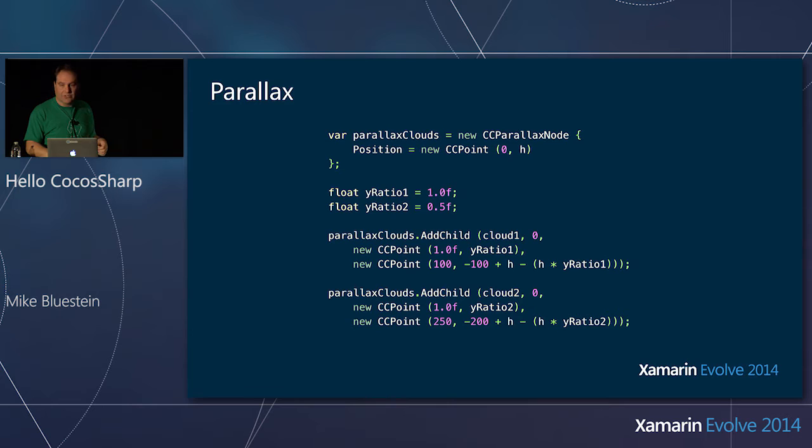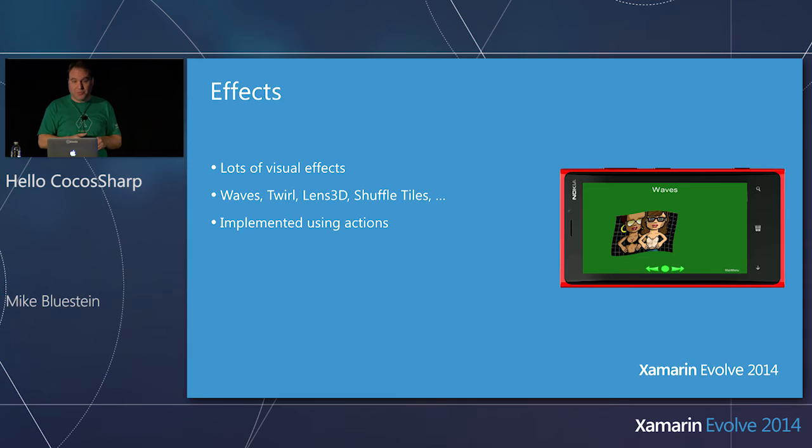Here's the code: I create a parallax node and add the clouds to it, setting a couple of ratios. There are actually three in the example — I just showed two to fit on the slide.